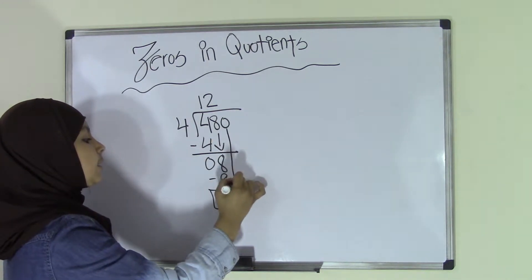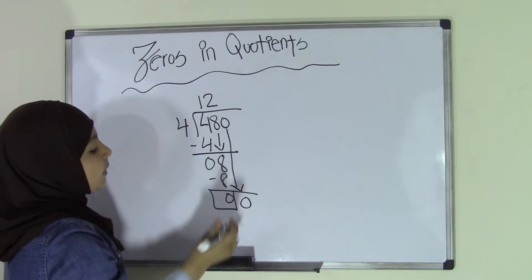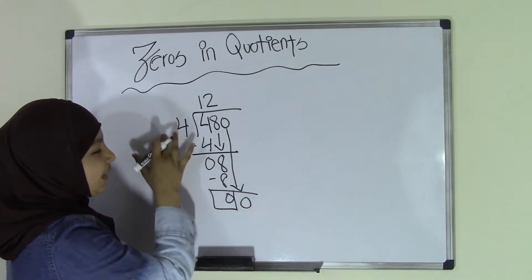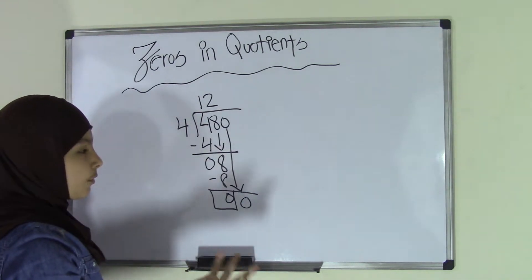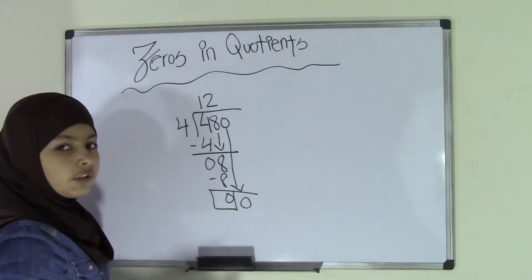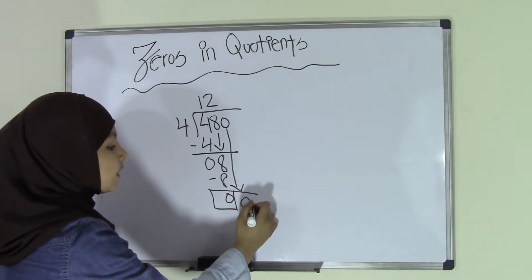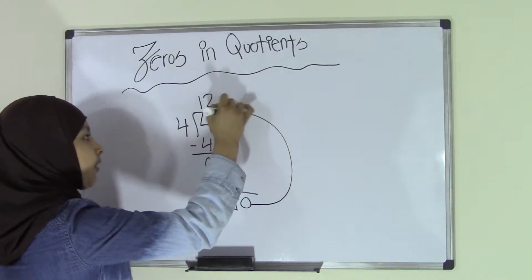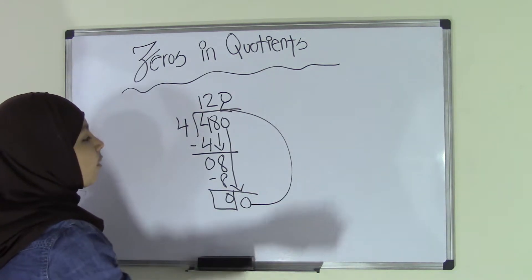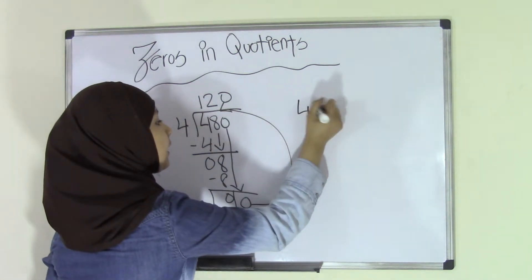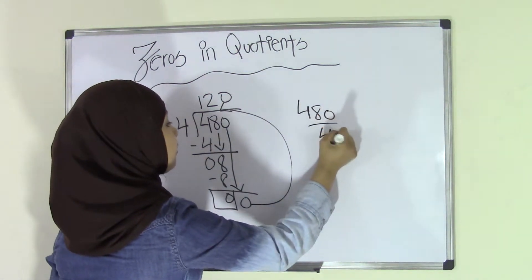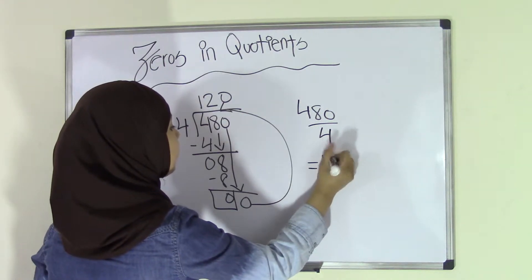Now let's take a look at this 0. We can't really divide 0 by 4, right? So all we have to do is take the 0 and move it over here. We're going to put it right here. That means our quotient for 480 divided by 4 equals 120.